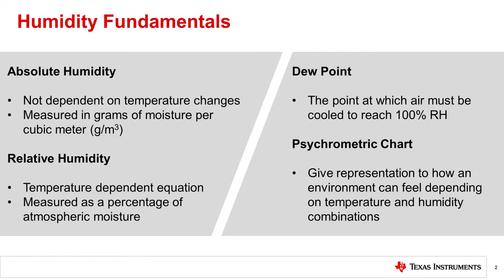To begin learning about our humidity sensors, we first have to understand the different ways humidity can be represented. The fundamental goal of either is to put an intrinsic value on the amount of water the atmosphere is holding. Absolute humidity is the measure of water vapor in the air, regardless of the temperature, and is expressed as grams of moisture per cubic meter. Relative humidity is expressed as a percentage, and its equation accounts for the changes in atmospheric temperature.